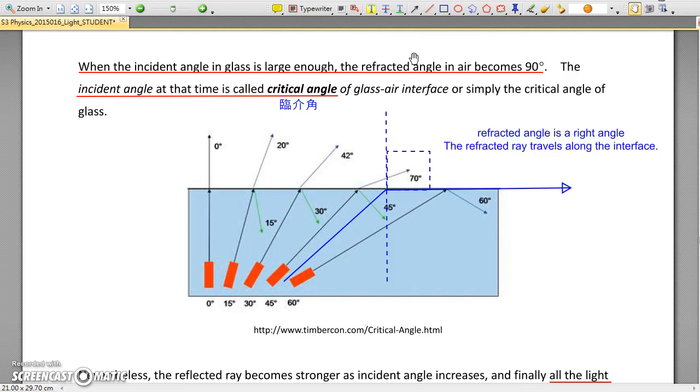At that time, the refracted ray travels along the interface. We call the incident angle at that time the critical angle.